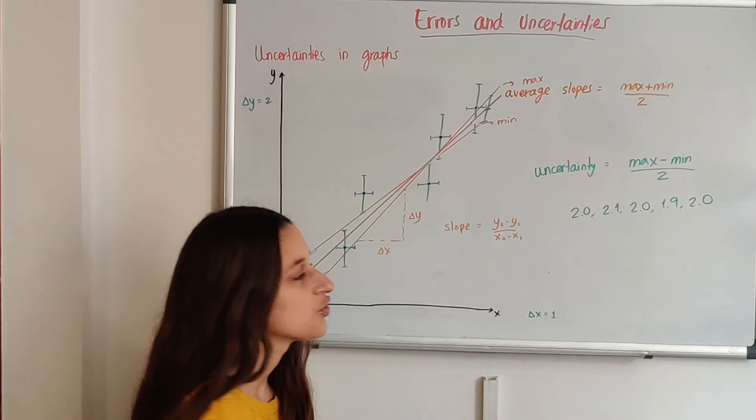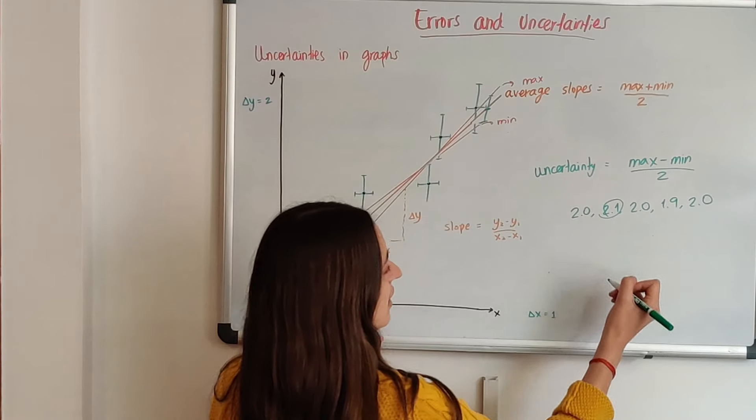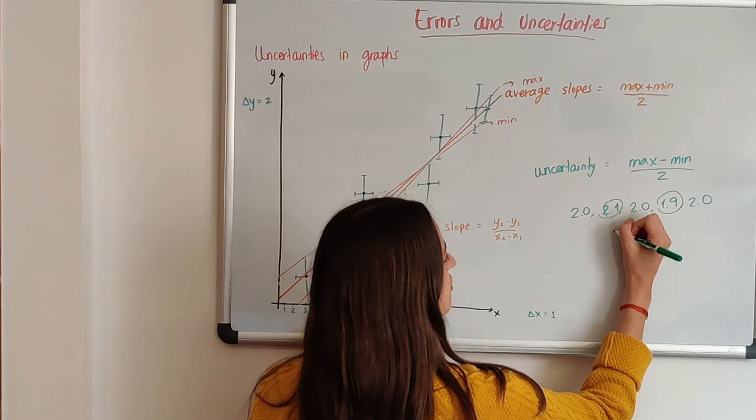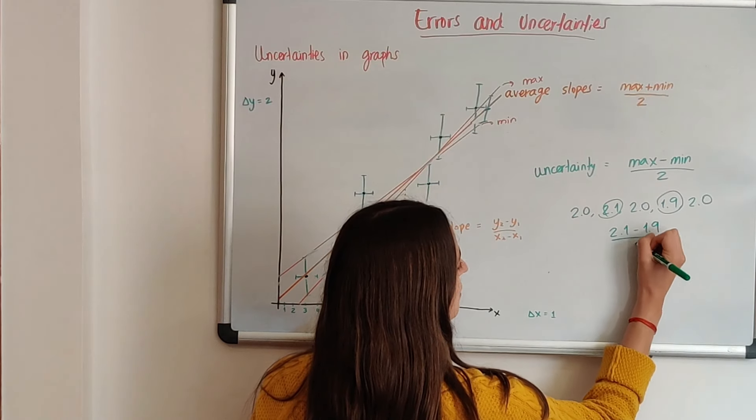So your biggest value is 2.1 and your smallest value is 1.9. So you're going to take 2.1 minus 1.9 and divide it by 2.